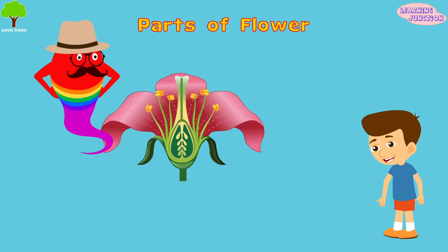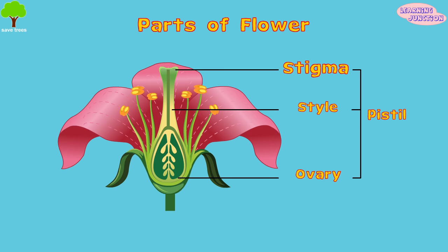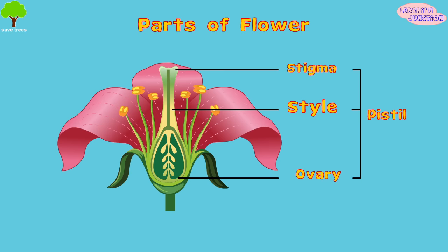Filament is the stalk that holds the anther and attaches it to the flower. The pistil is the female part of a flower, made up of the following parts: stigma — the sticky bulb that we see in the center of the flower.